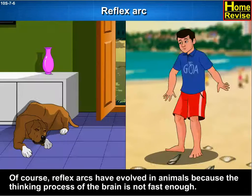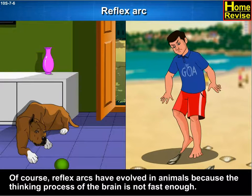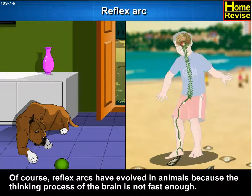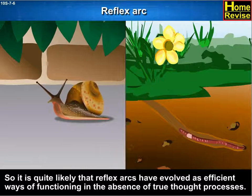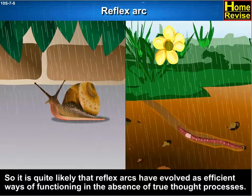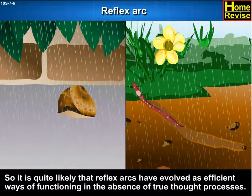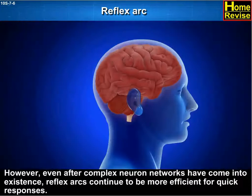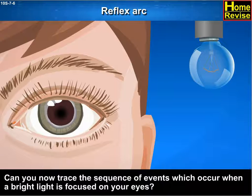Reflex arcs have evolved in animals because the thinking process of the brain is not fast enough. In fact, many animals have very little or none of the complex neuron network needed for thinking. So it is quite likely that reflex arcs have evolved as efficient ways of functioning in the absence of true thought processes. However, even after complex neuron networks have come into existence, reflex arcs continue to be more efficient for quick responses.